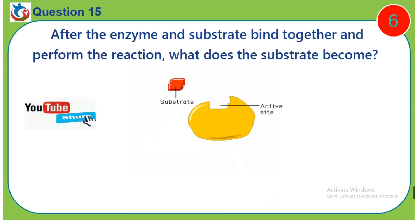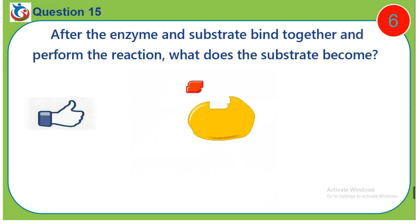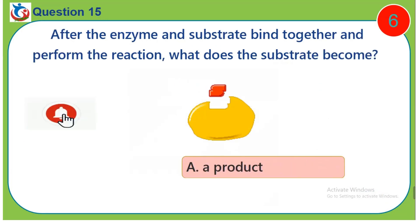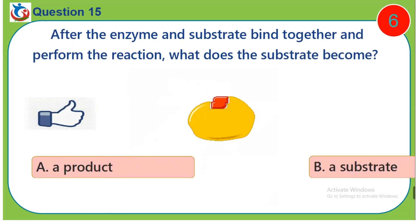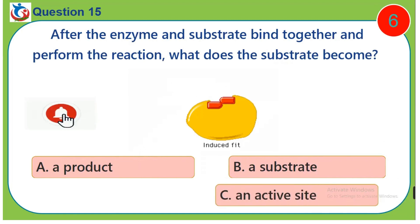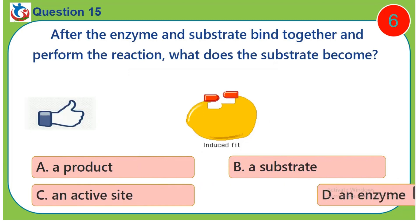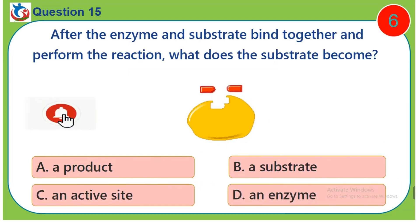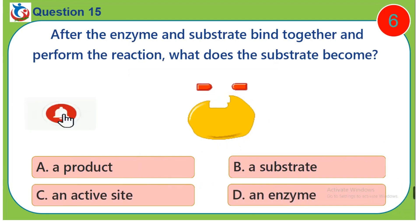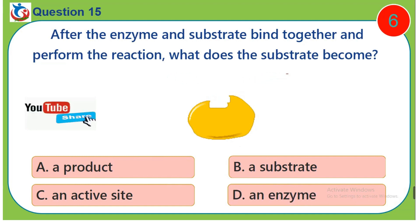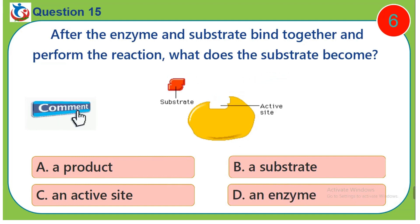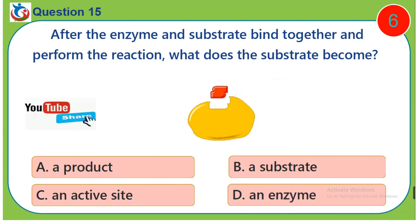Question 15. After the enzyme and substrate bind together and perform the reaction, what does the substrate become? A. A product. B. A substrate. C. An active site. D. An enzyme.